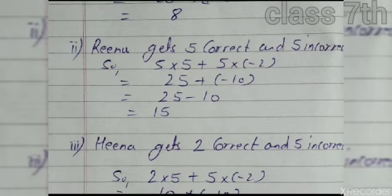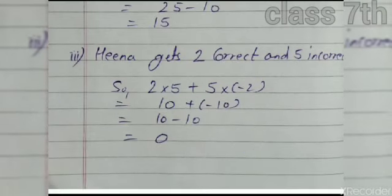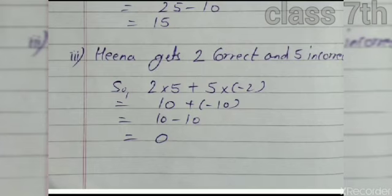Second part: if a student gets 5 correct and 5 incorrect answers — 5 multiplied by 5 equals 25, plus 5 multiplied by minus 2 equals minus 10. So 25 plus minus 10 equals 15. Wait — if it is 5 correct and 5 wrong: 5 into 2 gives 10, and 10 minus 10 equals zero.